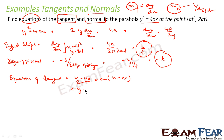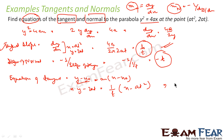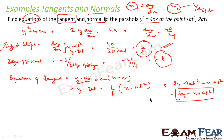Here, y₀ is 2at, m is 1/t since I am finding for the tangent, and x₀ is at². Solving this: ty − 2at² = x − at², or ty = x + at². That is my equation of tangent.